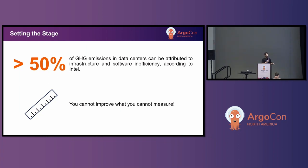Just to give some context to this talk: according to Intel, more than 50% of greenhouse gas emissions come from inefficiencies in infrastructure and software. That sounds alarming, which is why we need to start focusing more on testing and measuring our infrastructure power consumption in order to make improvements.